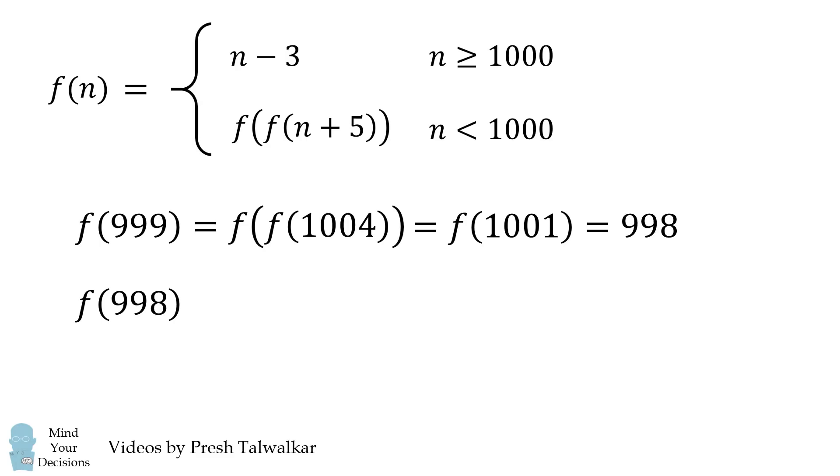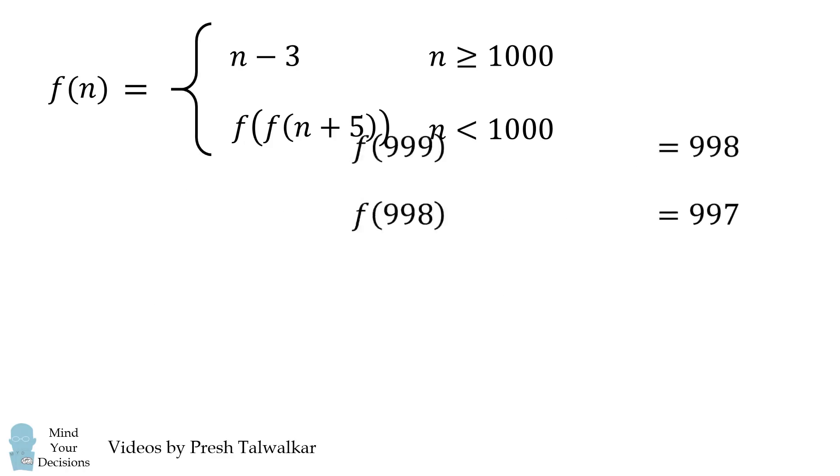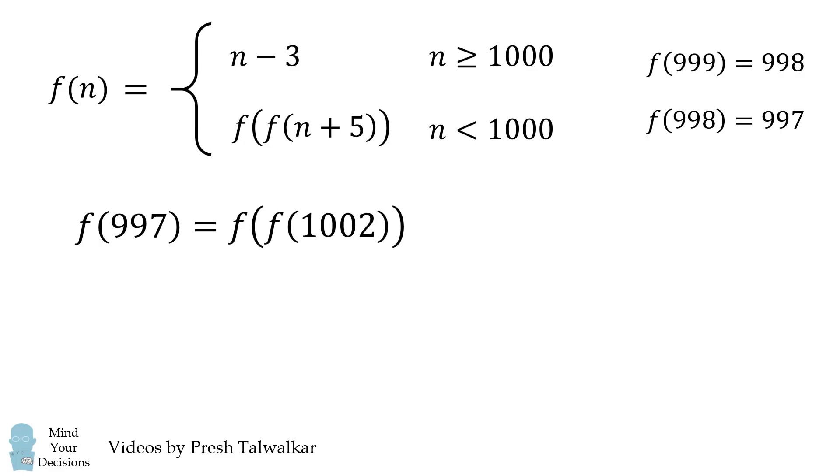We'll do a similar thing to calculate f of 998. We apply the definition of f, and we end up with 997. Let's try working out a few more examples. What's f of 997? Well, we work through the definition of f, and we get to f of 999. Luckily, we've just calculated that this is equal to 998.